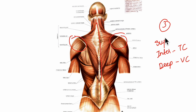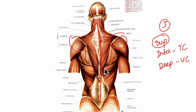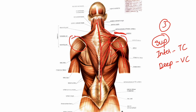Looking at the superficial back muscles, they are situated under the skin and superficial fascia. They originate from the vertebral column and attach to the bones of the shoulder — that is mainly the clavicle, the scapula and the humerus. All these muscles are therefore associated with the movements of the upper limb.